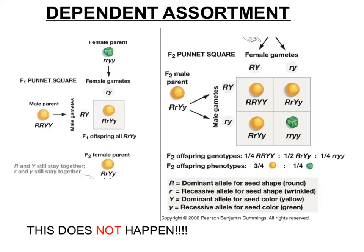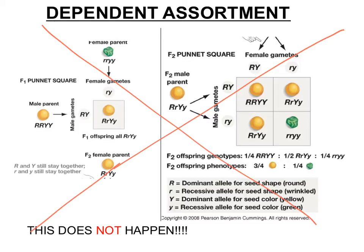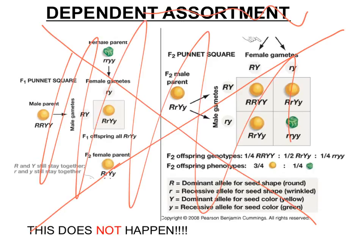If this didn't happen — if it were dependent assortment — this is not how it works. If it did and we made this cross, you'd get completely different results; they'd never come apart from each other. There's no such thing as dependent assortment. We can get gene linkage, but that's only if the genes are very close to each other on the same chromosome — then they're linked and go together. But we're talking about genes on separate chromosomes. It's independent assortment — genes come apart. Segregation — alleles come apart. That's all you need to know. Good job, people.